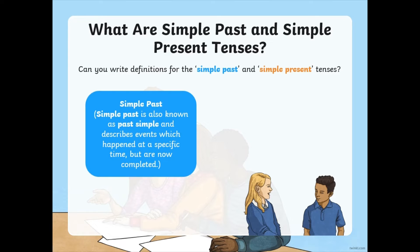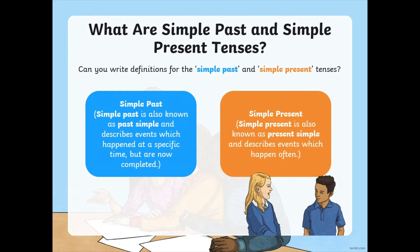Can you have a think about simple past and simple present? Simple past is also known as past simple, and it describes events which have happened at a specific time but are now finished. For example: 'I kicked the ball' — an action that started and finished in the past. Simple present, or present simple, describes events which happen often. For example: 'I kick the ball' — and it's happening in the present.